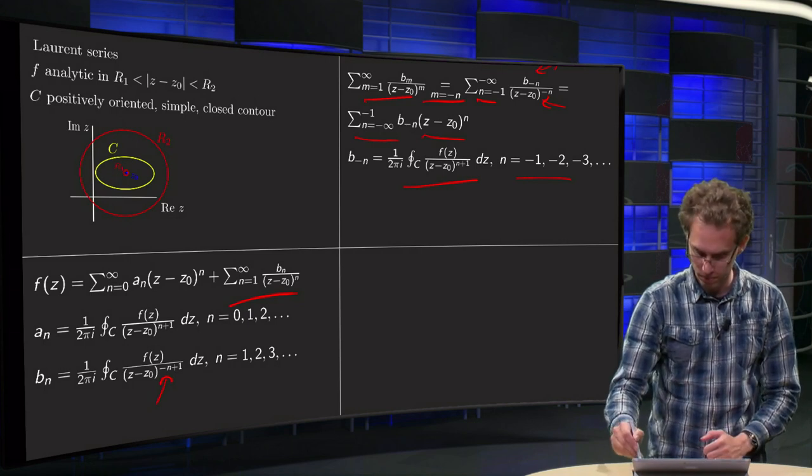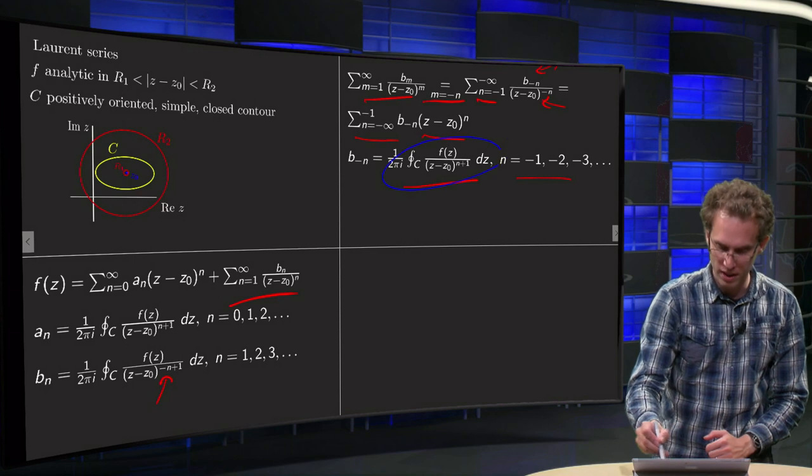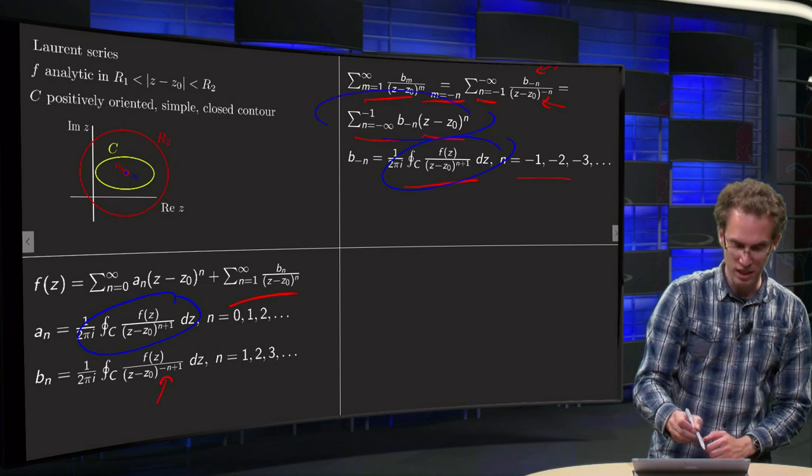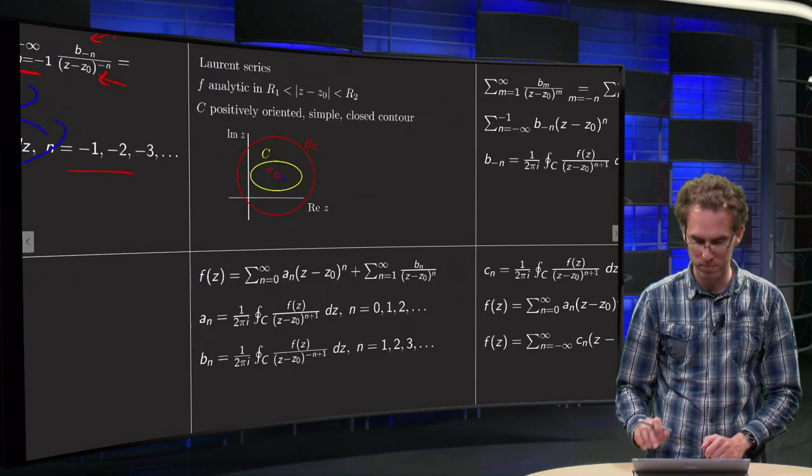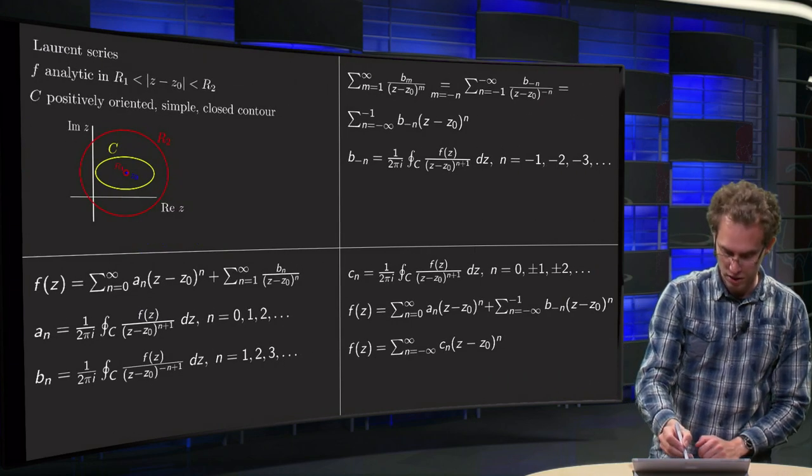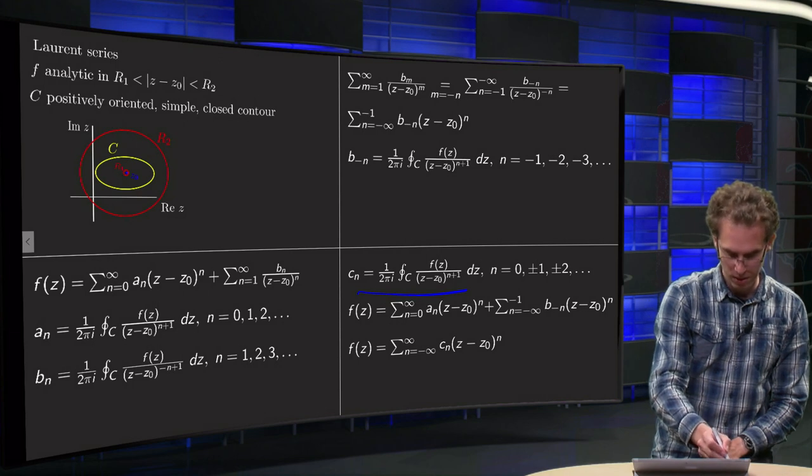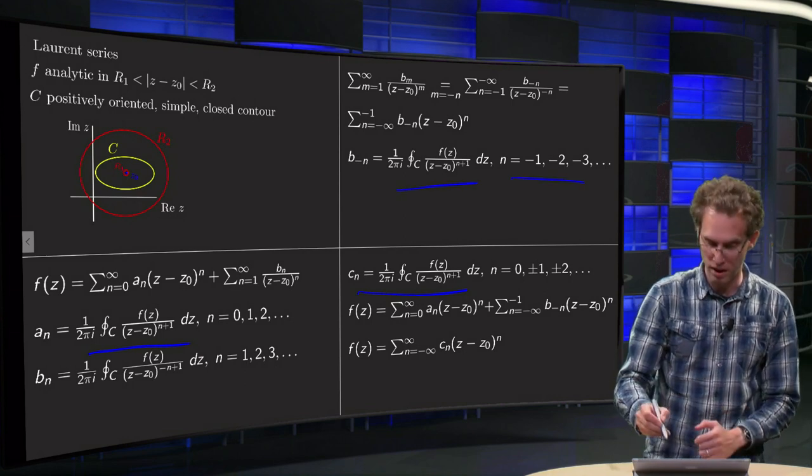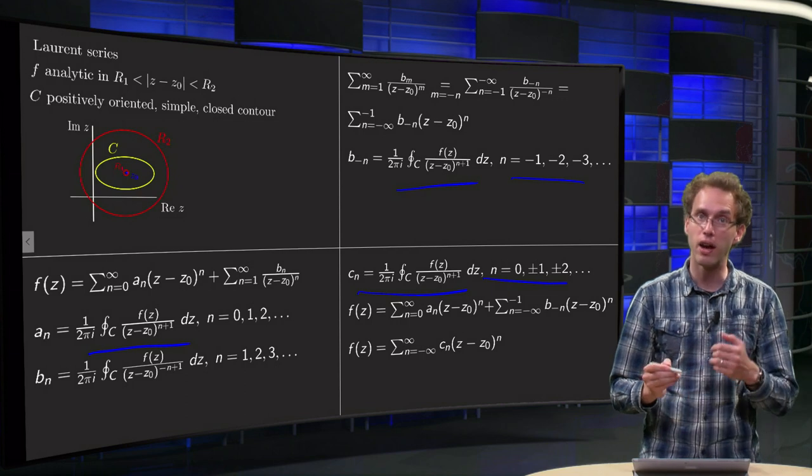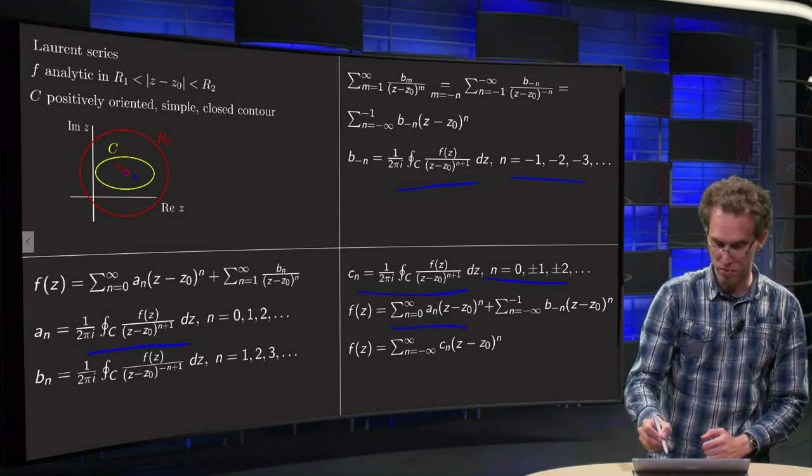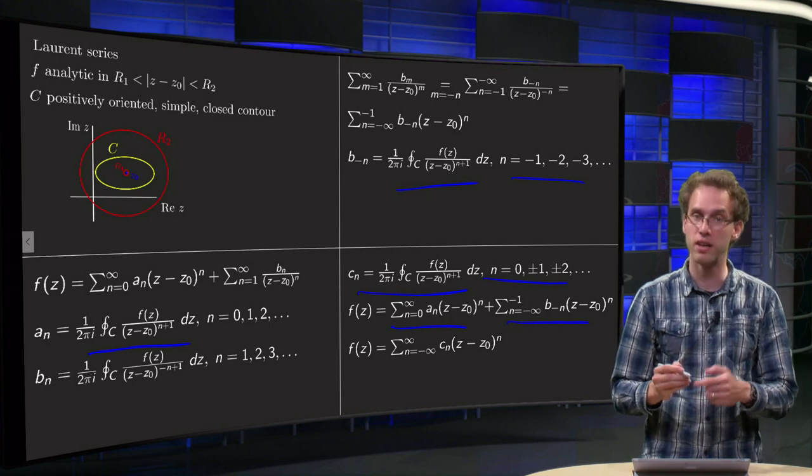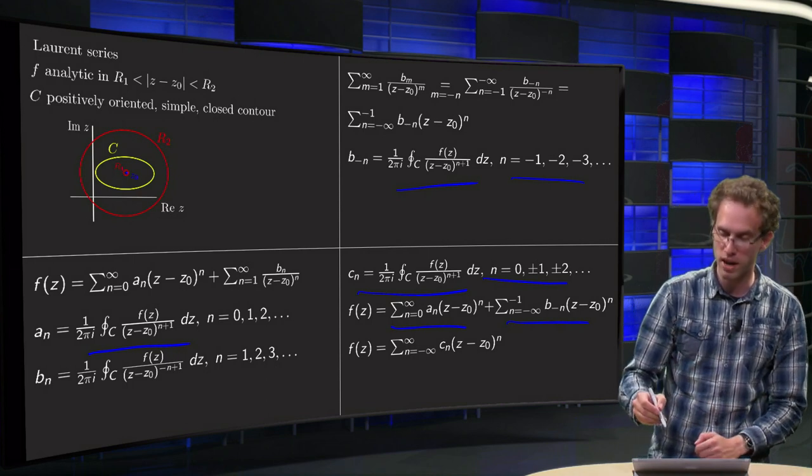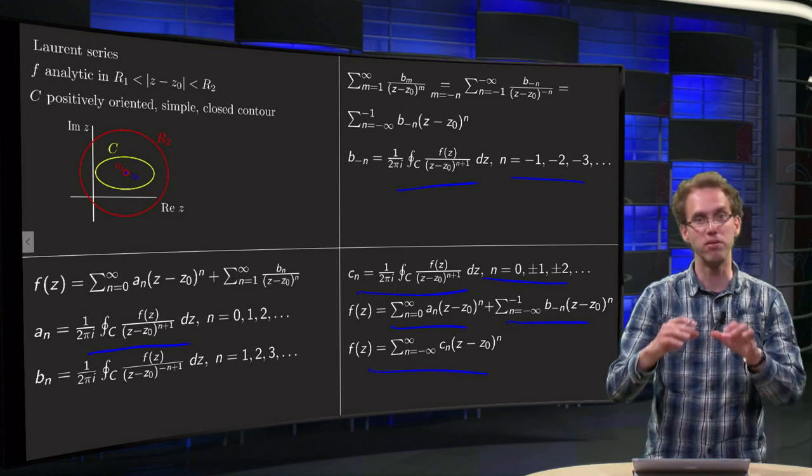But then you see that the expression for the b minus n is exactly the same as the expression for the an. And this part looks exactly the same as this part. So we can take them together. So we define cn as the an for n positive and as b minus n for n negative. So we have the cn for all n's. And then our f of z consists of the an plus the b minus n. But now for n positive the an are just cn, and for the negative the cn equals the b minus n. So that means that we can write our f of z as one sum.